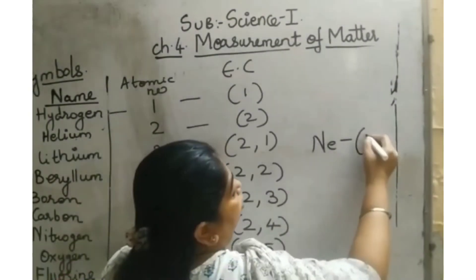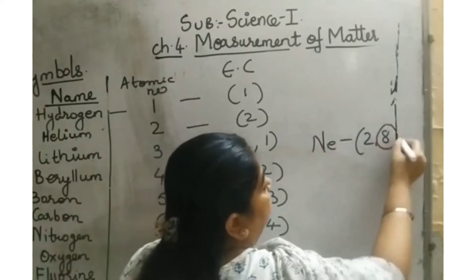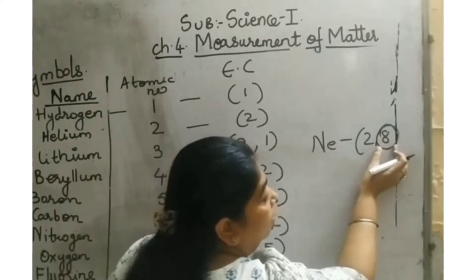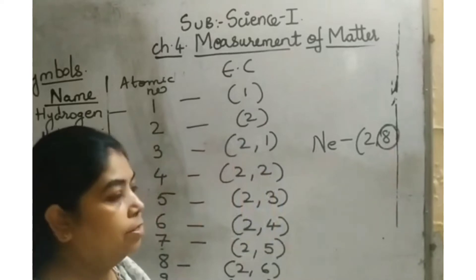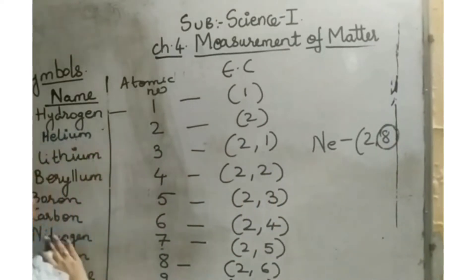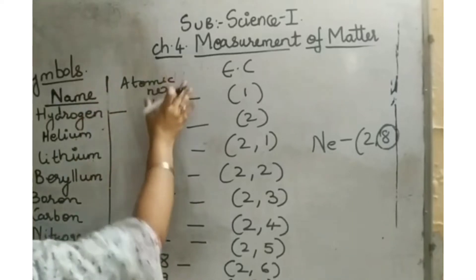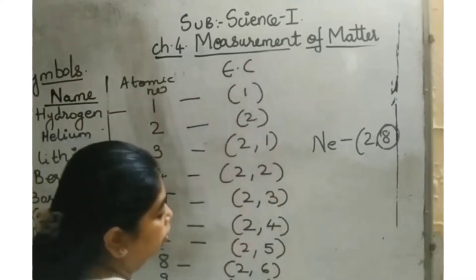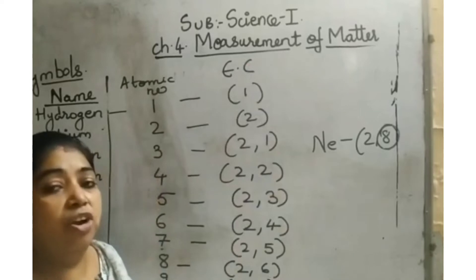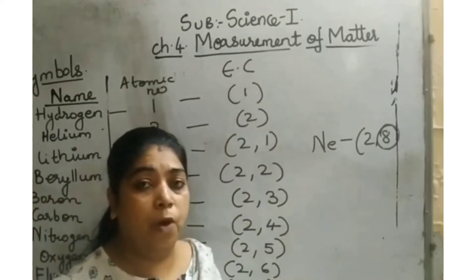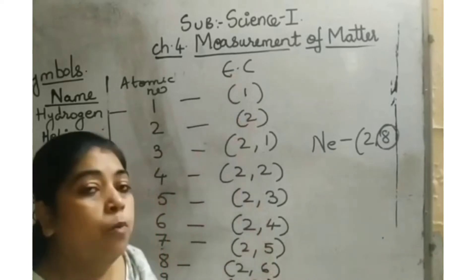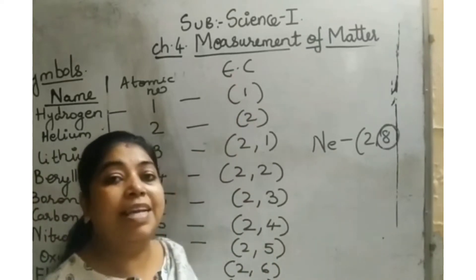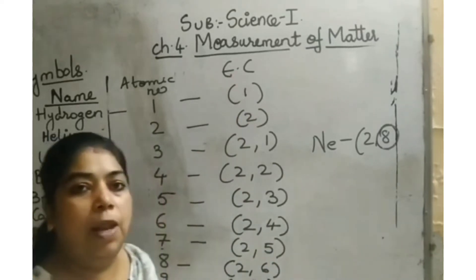Neon has electronic configuration 2 and 8. Again, if the outermost orbit has 8 electrons, the element is considered stable. So in this way, knowing the name, symbol, atomic number, and electronic configuration is essential — because from the electronic configuration itself, we will come to know the valency of each element.